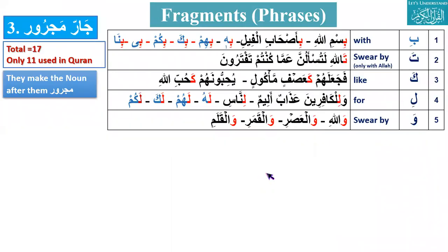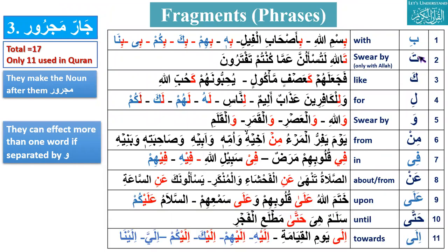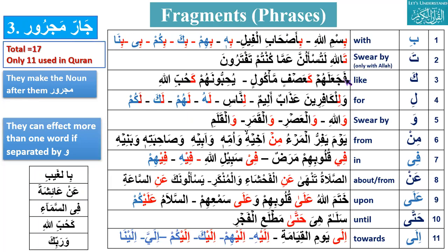There are many Huruf-e-Jar — there is a list. We should first know their meanings. These are all Huruf-e-Jar, and most are commonly used in almost every line of the Quran. In English, they are called prepositions. The meanings are very important. Whenever Huruf-e-Jar come before any noun, they make that noun Majroor. This is the important thing.